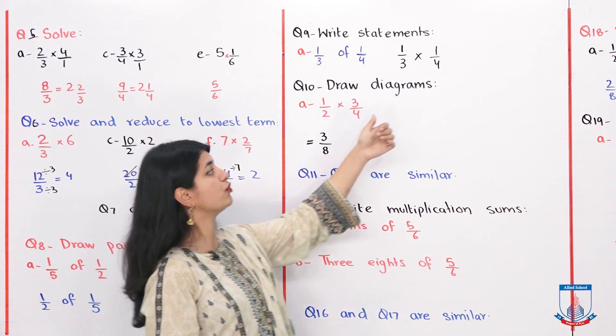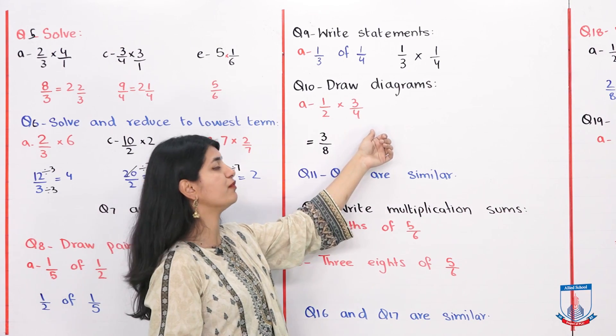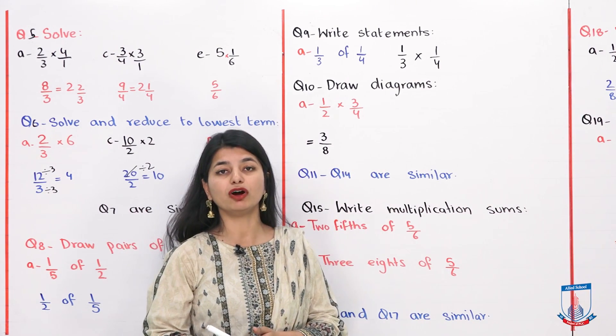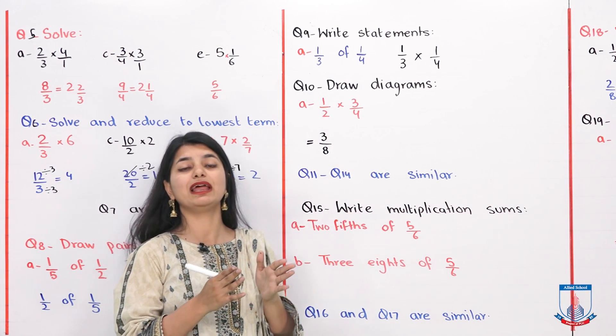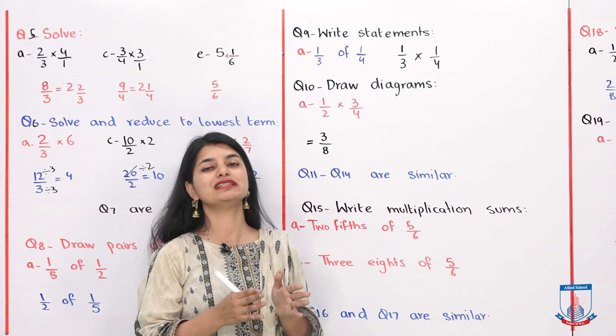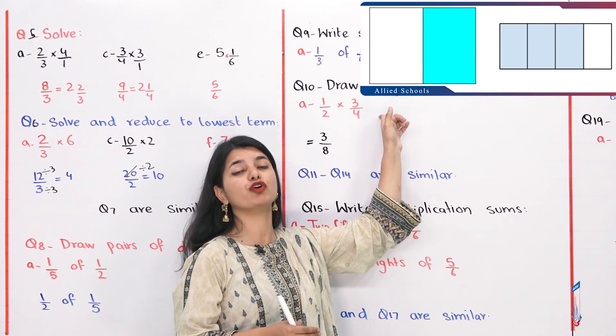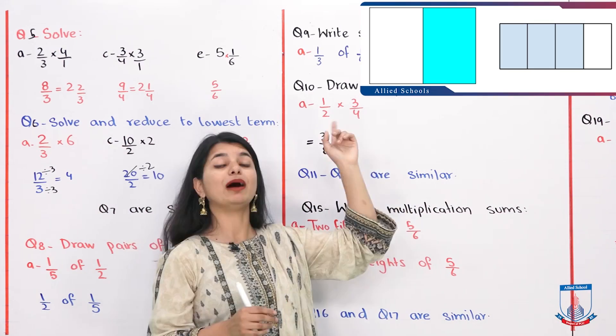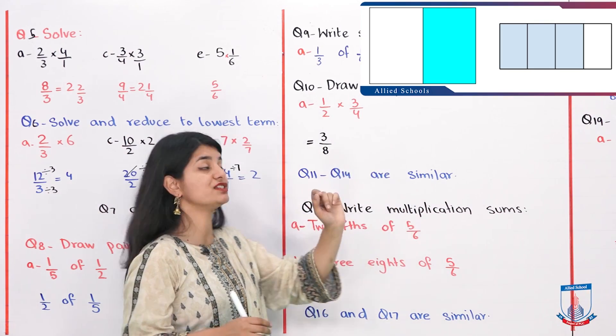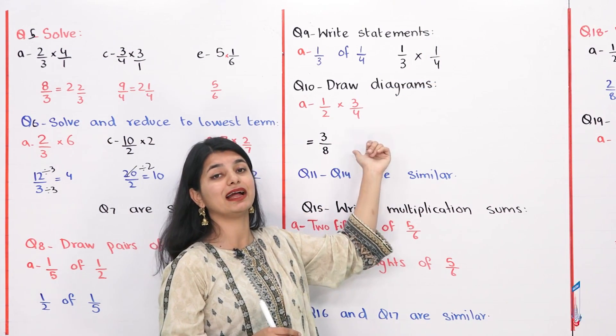Question number 10 is draw diagrams. 1 over 2 into 3 by 4. How do we draw this diagram? First you will draw 1 over 2. Just like you can see in the picture. Now who do we multiply? Who do we do in picture? 3 by 4 diagram. When you multiply them, you multiply 1 by 3, that is 3. And you multiply 2 by 4, that is 8. And the answer is 3 by 8.